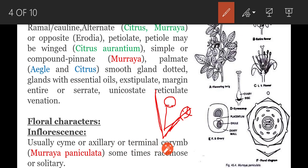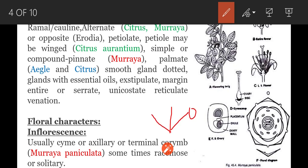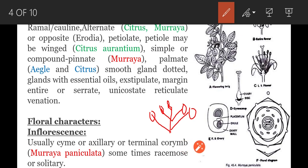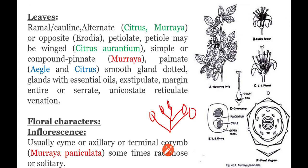Terminal corymb is seen in Murraya paniculata. In corymbose inflorescence, the inflorescence axis shows indefinite growth and flowers are present on either side of the inflorescence axis, but lower flowers have long pedicels and upper flowers have short pedicels so that all flowers are brought to the same height. Such inflorescence is called corymbose inflorescence. Sometimes solitary flowers are also observed.